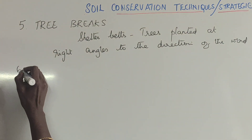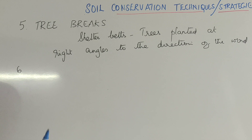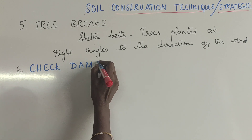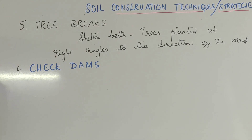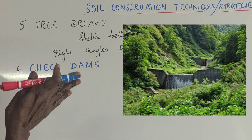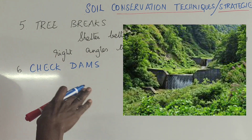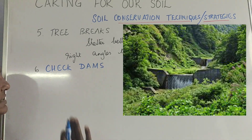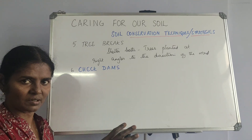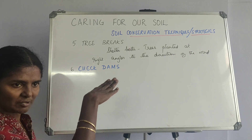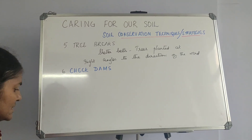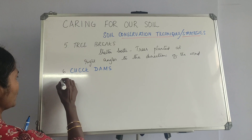The sixth method is check dams. When there is a flow of water, a small dam or wall is erected in between so that water is stored. This is called a check dam. When soil is eroded along with water, it prevents the soil from coming down and minimizes soil erosion, conserving the soil to a certain extent.